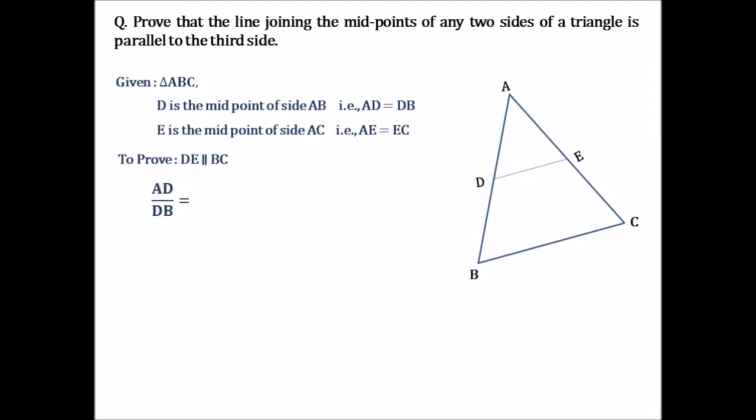Proof: since AD by DB can be written as AD by AD as we have AD and DB equal, on cancelling AD from both numerator and denominator, AD by DB will equal to 1 by 1. Similarly, AE by EC can be represented as AE by AE. Cancelling AE from both numerator and denominator will have the ratio of AE by EC equals to 1 by 1 as well. So, we got the ratio of AD by DB equals to AE by EC.